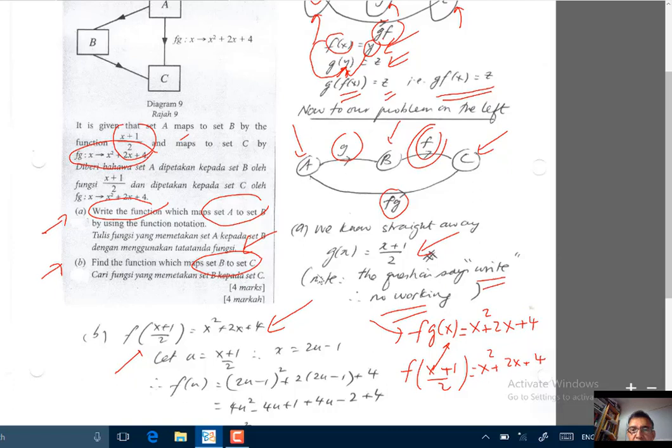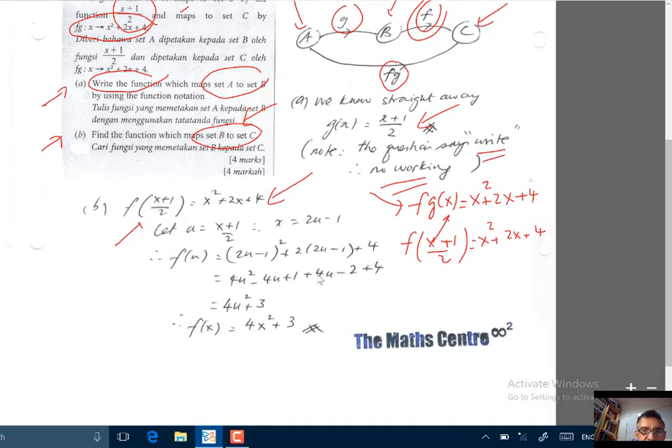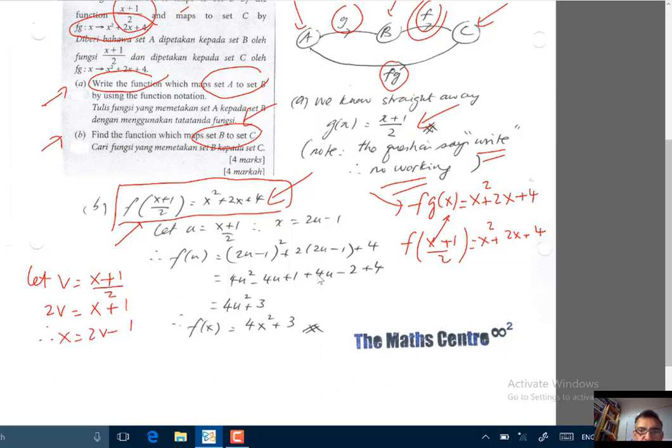And then what we do, we can use a substitution. Let's focus on this. So let's katakan v adalah sama dengan (x+1)/2. Ini bermakna 2v ialah x+1. Ini bermakna x ialah 2v-1.